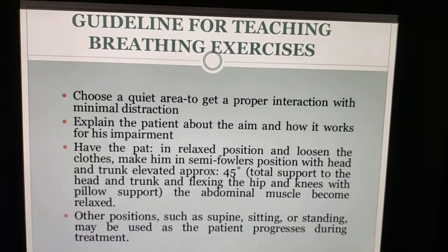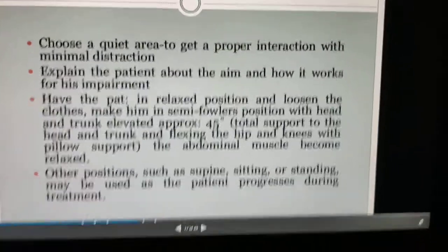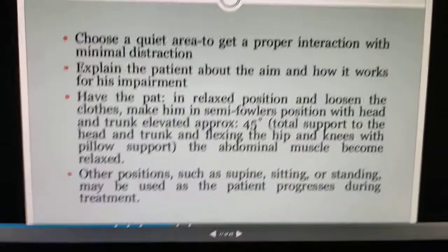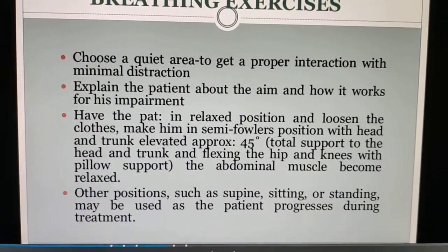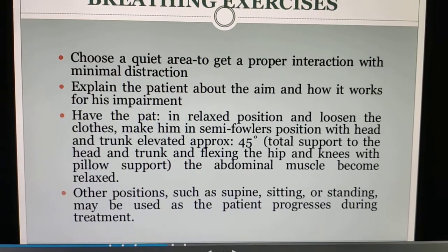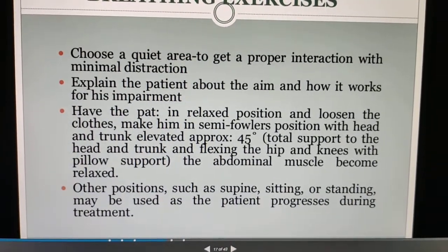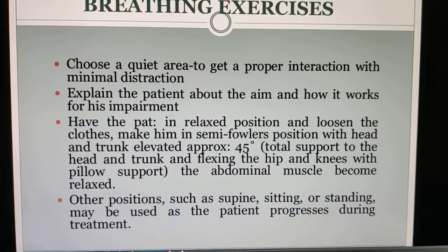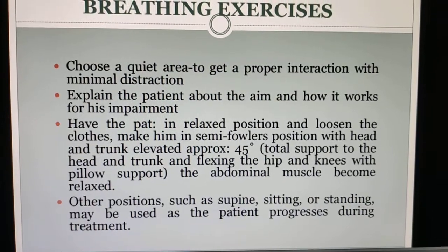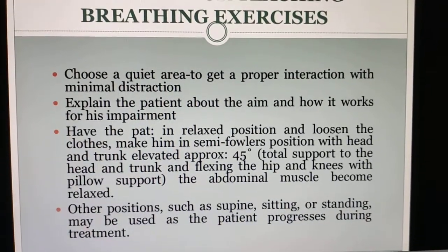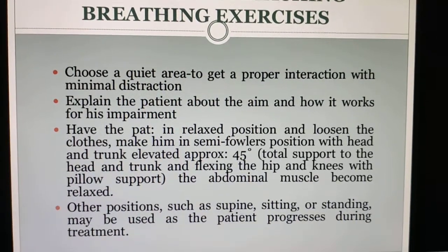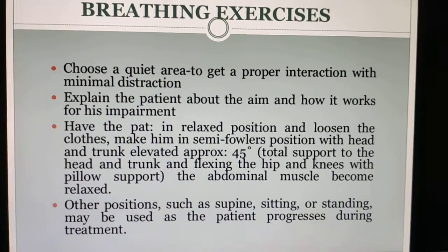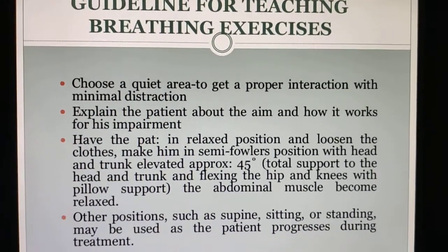Guidelines for teaching breathing exercises: choose a quiet area to minimize distraction, explain to the patient the aim and how it works for their impairment. Place the patient in a relaxed position with loose clothing in the semi-Fowler's position with the head and trunk elevated approximately 45 degrees so the abdominal muscles become relaxed. Other positions include supine, sitting, or standing, based on the patient's condition.